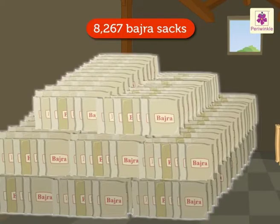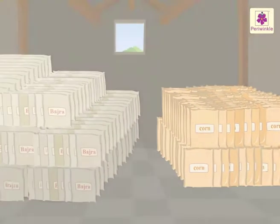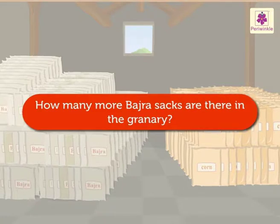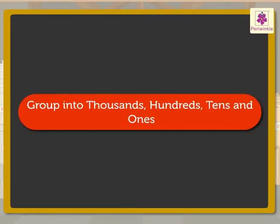At this granary, look, there are 8,267 bhajra sacks and 3,698 corn sacks. Let us find out how many more bhajra sacks are there. We can get the answer by finding the difference between 8,267 and 3,698. So, let us group both these numbers into thousands, hundreds, tens and ones and then subtract them.